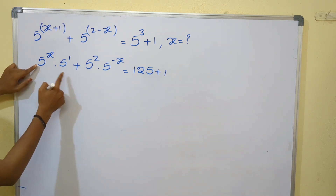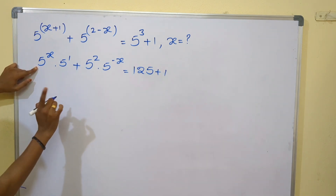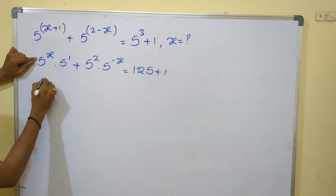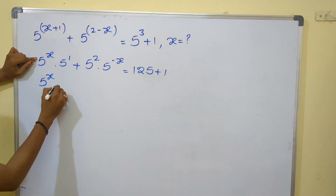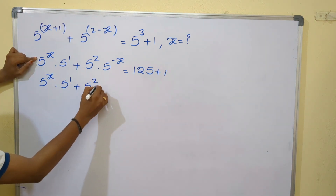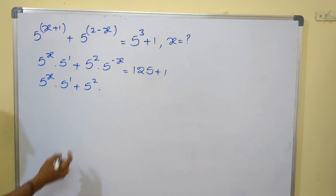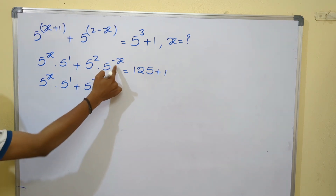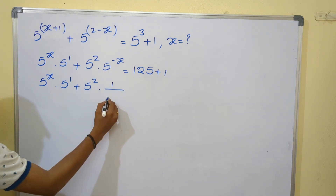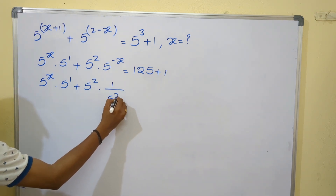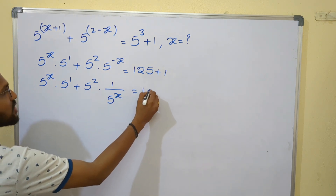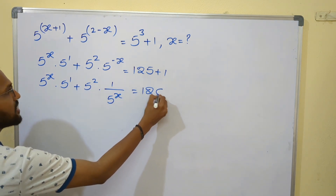From these two terms, I cannot take anything common. So what I will do is keep 5^x · 5^1 as is, and 5^2 · 5^(-x), which can also be written as 1/5^x, equals 125 + 1, which is 126.